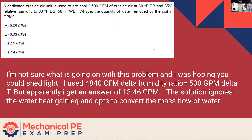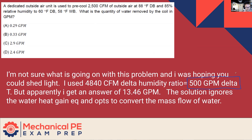The solution ignores the water heat gain equation and opts to convert the mass flow of water. My question to you would be: why are we using 500 GPM delta T? Why are we interested in the heat gain? Really, to answer the question of what's the quantity of water being removed, do we have to get involved in what the heat gain is?